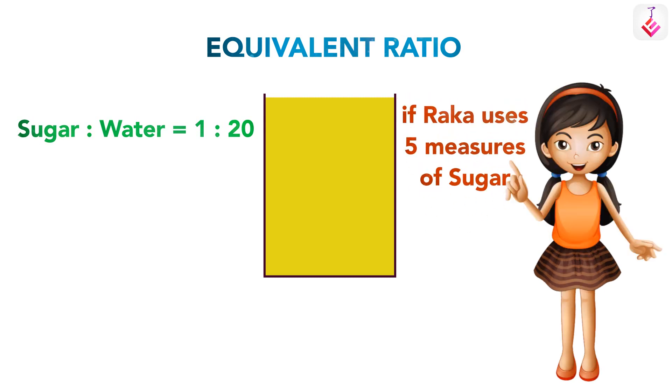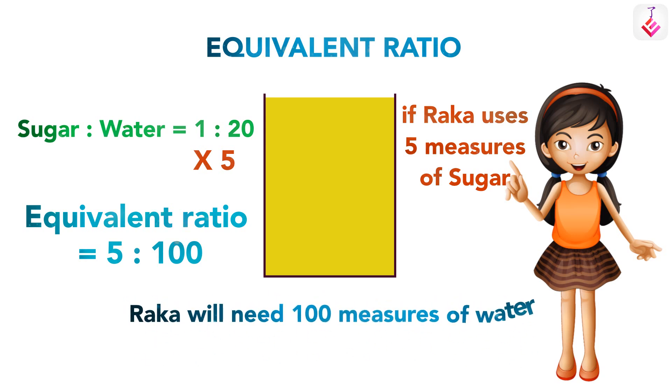As we know, sugar to water equals one to twenty. Let's multiply the ratio by five. Now the equivalent ratio will be five to one hundred. So Raka will need 100 measures of water.